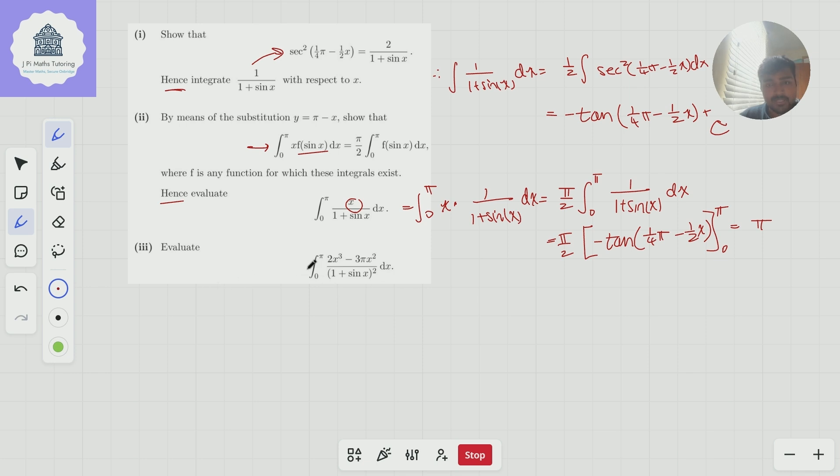Let's look at the last part now. So we want to evaluate the integral from 0 to π of two x cubed minus three pi x squared over one plus sine x squared dx. Now, we can't quite use this same rule up here, at least immediately, because it's not quite easy to write this in the form x times f of sine x.